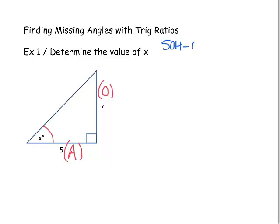SOHCAHTOA is a helpful way to remember how those three trig ratios work within a right triangle. In this diagram, we have the opposite and adjacent legs looking from that angle of x degrees, and opposite and adjacent are the ingredients of the tangent ratio. So we can say that the tangent of that x-degree angle equals 7 over 5, which is opposite over adjacent.